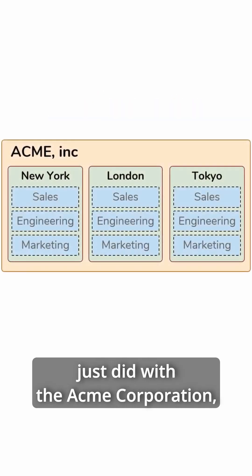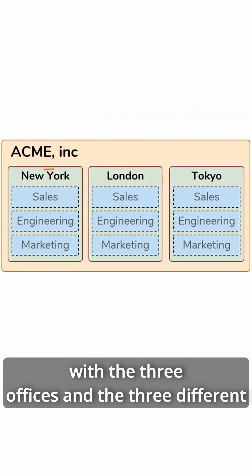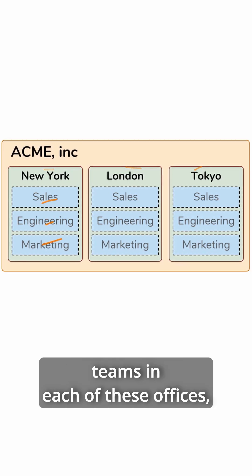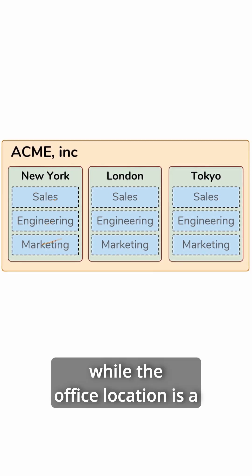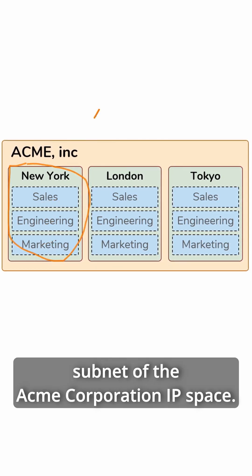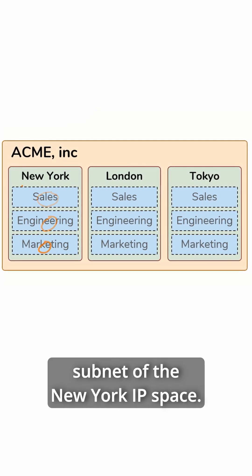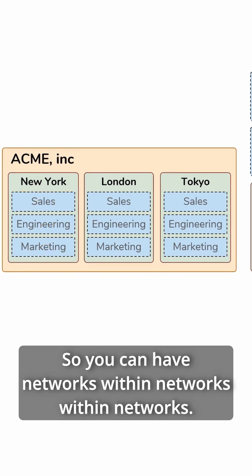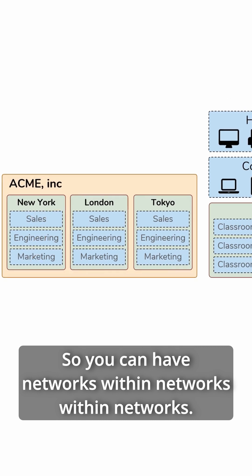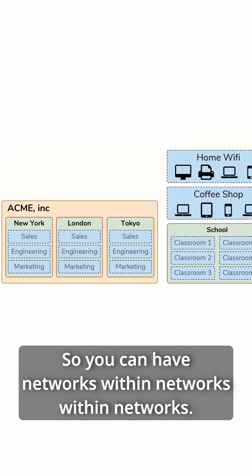In fact, that illustration we just did with the Acme Corporation with the three offices and the three different teams in each of these offices — the office location is a subnet of the Acme Corporation IP space, and the specific teams are a subnet of the New York IP space. So you can have networks within networks within networks.